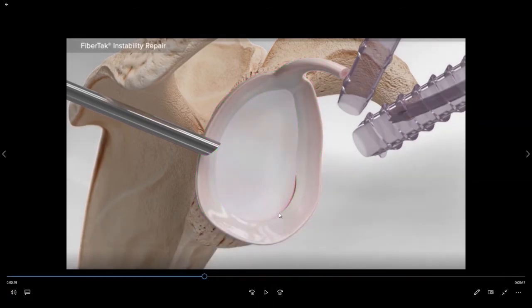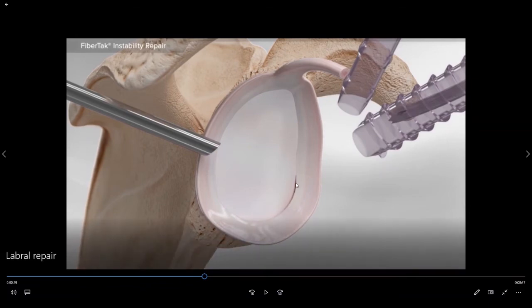So in order to perform an arthroscopic labral repair we will initially roughen up the bone on the under surface of this torn labrum so as to create bleeding that will then help to stimulate the healing of the labrum back down to the bone.